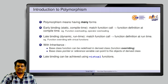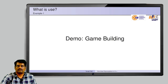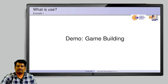The keyword virtual is used for the implementation of runtime polymorphism. So those are all 5 points. Now, what is the use of this? We will see one practical example by building a simple toy game.